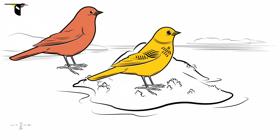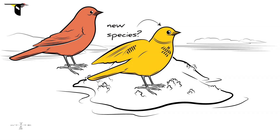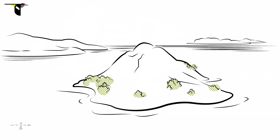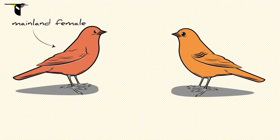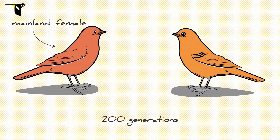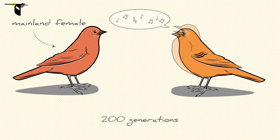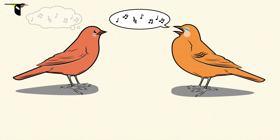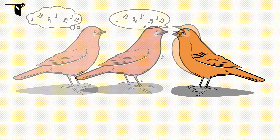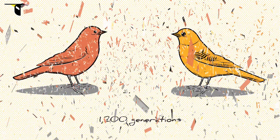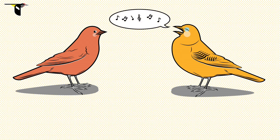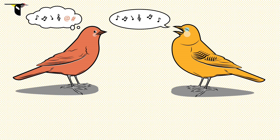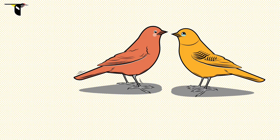But at what point are we confident that this island population has really changed enough to become a new species? Let's put our definition to the test. If we introduce a female from the mainland species to a potential mate from the island after 200 generations in isolation — about 400 years in bird terms — will they mate? It appears that these two still recognize each other as members of the same species. How about after another 1,000 generations of isolation? Now the female finds this island male's song a bit strange, but she still chooses to mate with him.